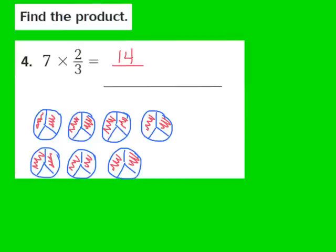Remember, we've divided our circles into 3 equal parts, so we're going to make that 14 over 3. Now remember, we have to make sure that our answer is in its simplest form. If I have the fraction 14 thirds, that's an improper fraction. What I know is 3 goes into 14 a total of 4 times, so I write 4 as my whole number. 4 times 3 is 12, so I have 2 left over. That 2 becomes my numerator and my denominator remains a 3. So 7 times 2 thirds gives me 4 and 2 thirds.